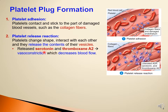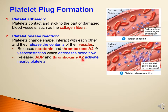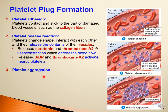Released mediators include ADP, serotonin, and thromboxane A2. Serotonin and thromboxane A2 cause vasoconstriction, reinforcing the vascular spasm and reducing blood flow through the damaged area. ADP and thromboxane A2 activate and recruit additional nearby platelets to adhere to the site of injury. Finally, platelet aggregation results in many platelets adhering to the injury site, forming a platelet plug that tries to seal or bridge the gap in the injured blood vessel.